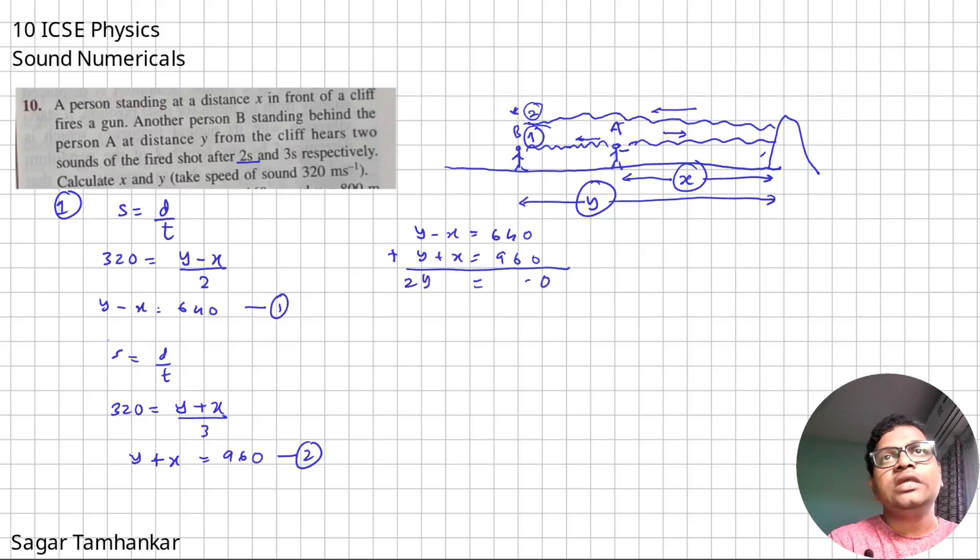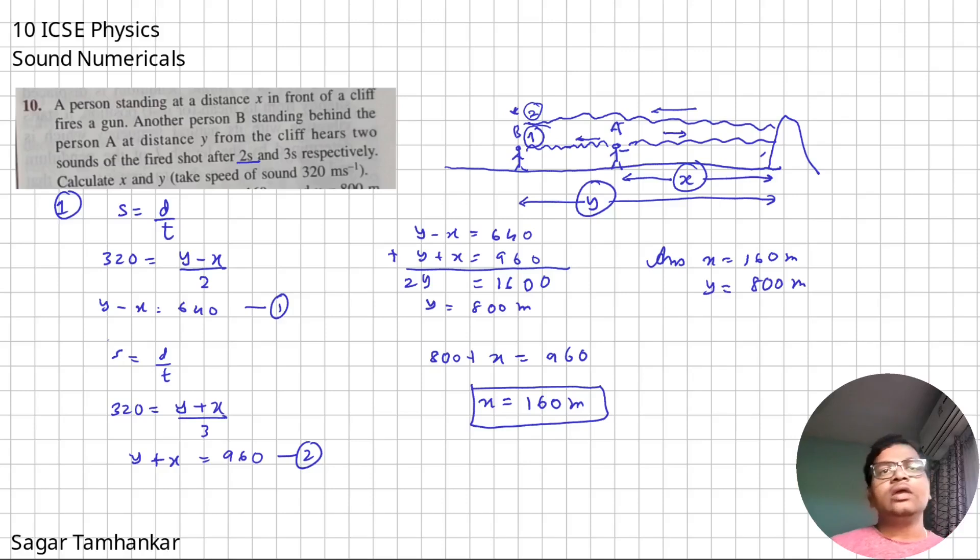So y equals 800 meters. And then after plugging in, what do we get? We get 800 plus x as 960. So x equals 160 meters. So the value of x is 160 meters, and that of y is 800 meters. It's quite an interesting question. Let's go to the next one.